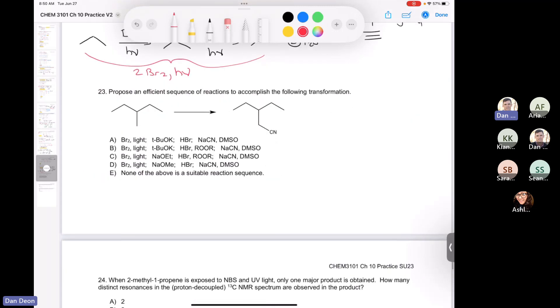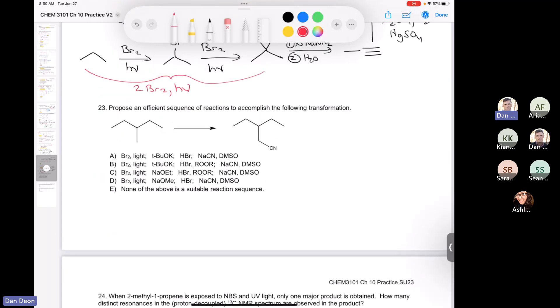We make the enol, and then the enol undergoes tautomerization to give us the ketone, acetone. Alright, number 23, really moving along here. Propose an efficient sequence of reactions to accomplish the following transformation. Well, the only way that I can think of to put a cyanide group, or a nitrile group, sorry I misspoke, to put a nitrile group out at the end is to do an SN2.